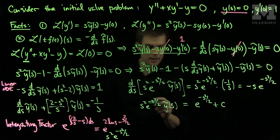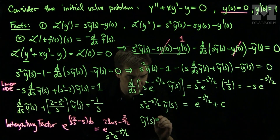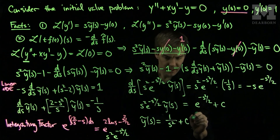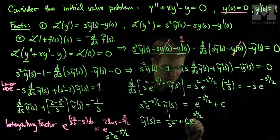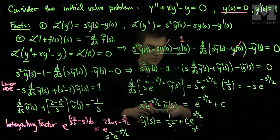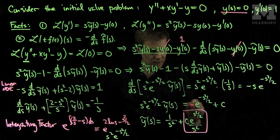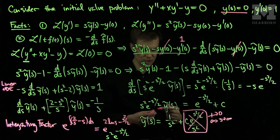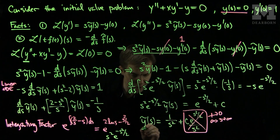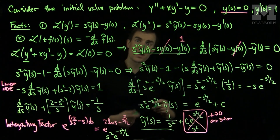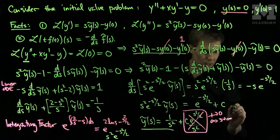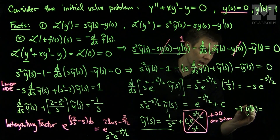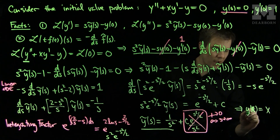Finally, I will multiply both sides by the reciprocal, so the Laplace Transform of y equals 1/s² plus c · e^(s²/2) / s². We observe that the second term does not tend to zero as s approaches infinity, so we will discard that solution because it's not valid. We conclude that the Laplace Transform of y is 1/s², and since the Laplace Transform of t is 1/s², we can conclude that y(x) = x.